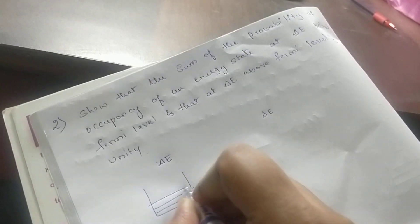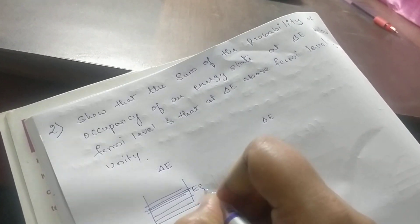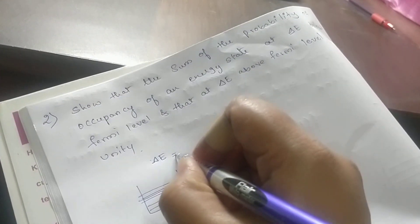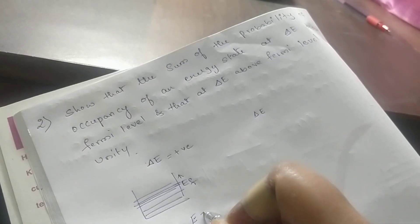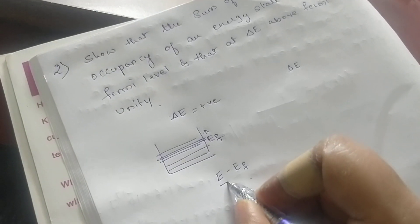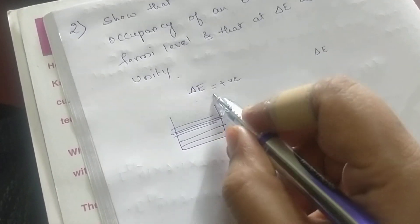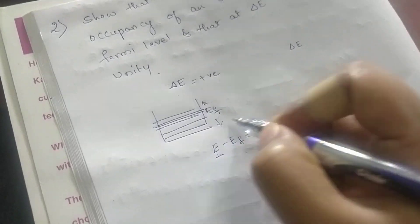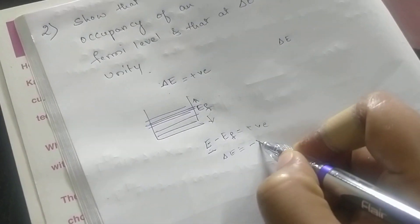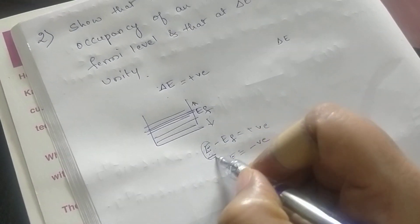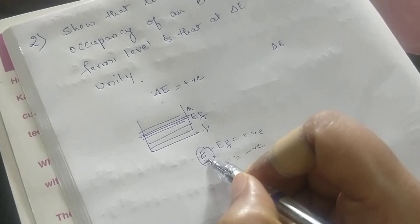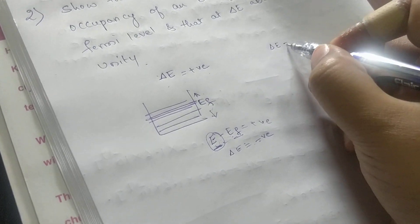Let me consider this system. If I take above the Fermi level, the delta E value will be positive, because e minus ef — when e is above the Fermi level, you subtract ef from e and you get a positive value. That's why whenever I go above the Fermi level, delta E is positive. Below the Fermi level, delta E becomes negative, because e minus ef gives a lesser value than the Fermi level.